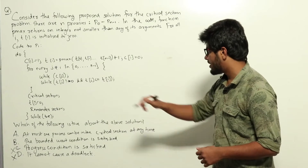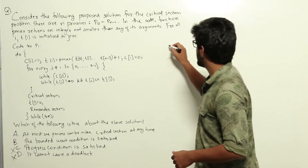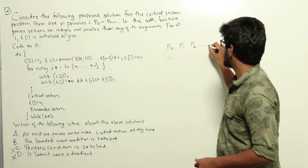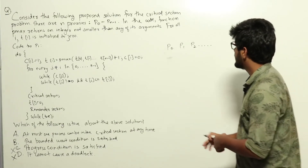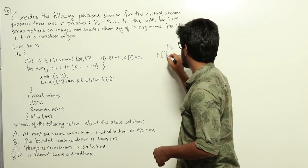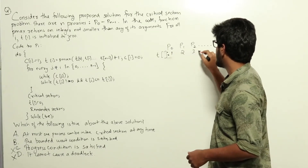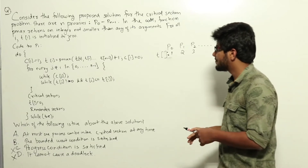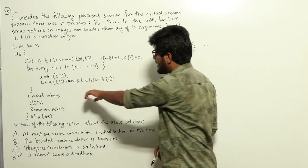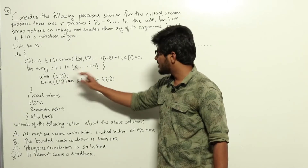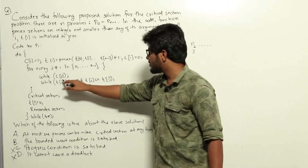Let's look at option A: at most one process can be in the critical section at any time. Suppose we have processes p0, p1, p2, etc. Let us say deadlock is not occurring. Let t values be assigned as: t[0]=1, t[1]=2, t[2]=3, etc. In this loop, a process i can enter the critical section only when there is no other process having a t value less than or equal to the t value of the current i.